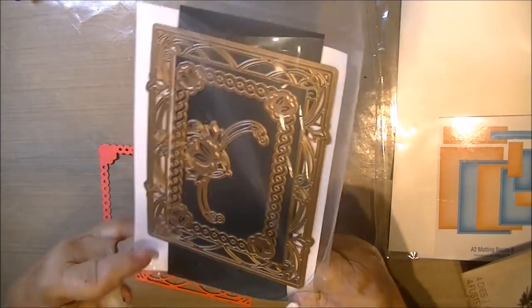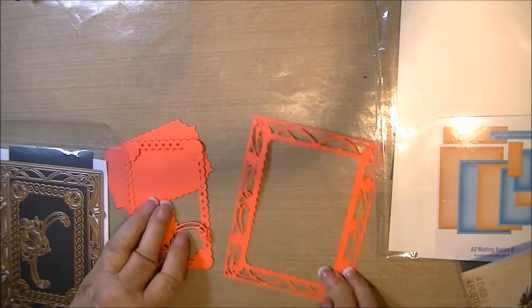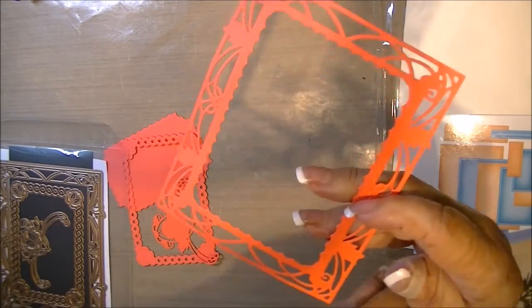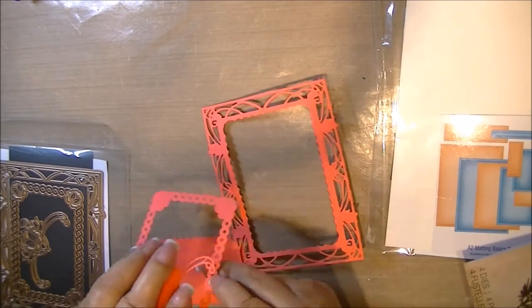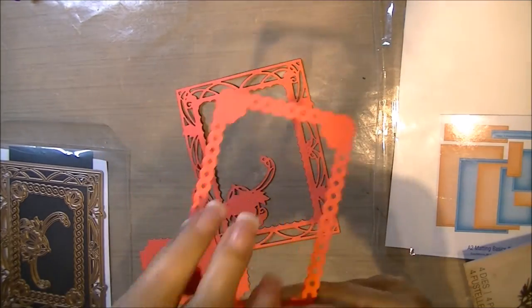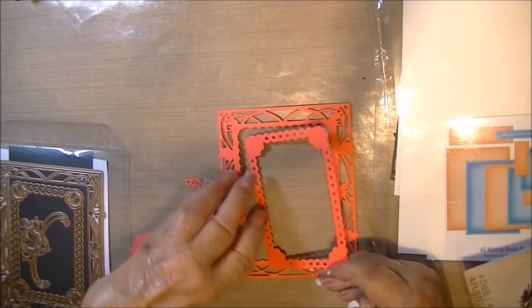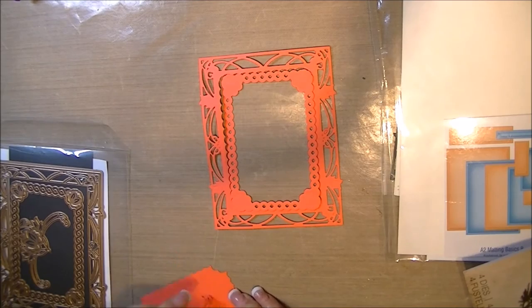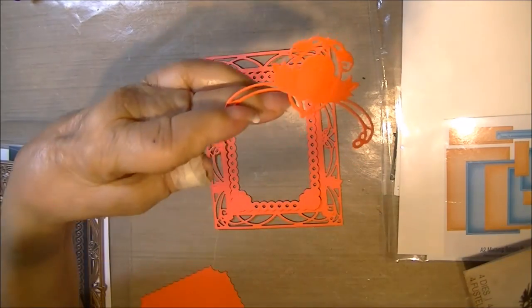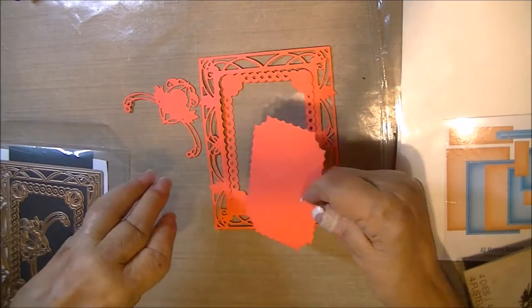This is a Spellbinders new die. It's a Nestabilities and it's called Lily. It's an accent. It's actually Water Lilies Decorative Accents. These are the pieces to it. These are not the colors I'm using. These are just a sample. I want to show you what I'll cut out.